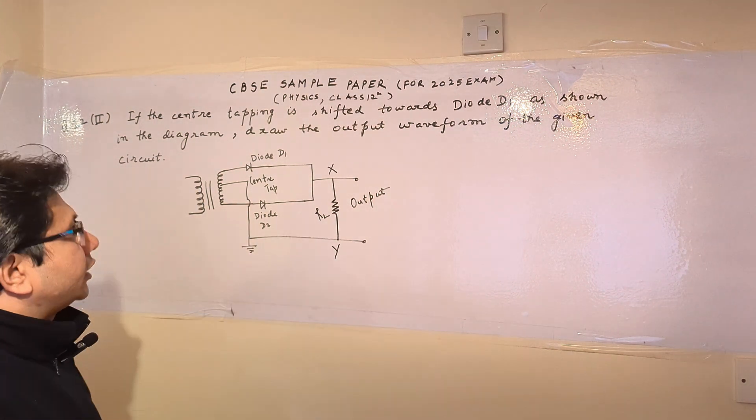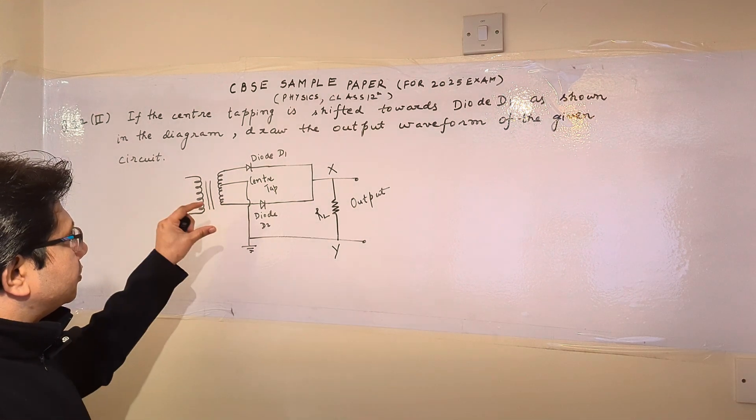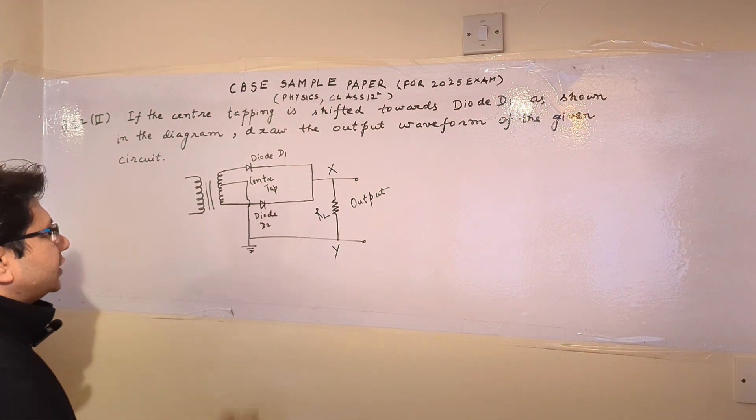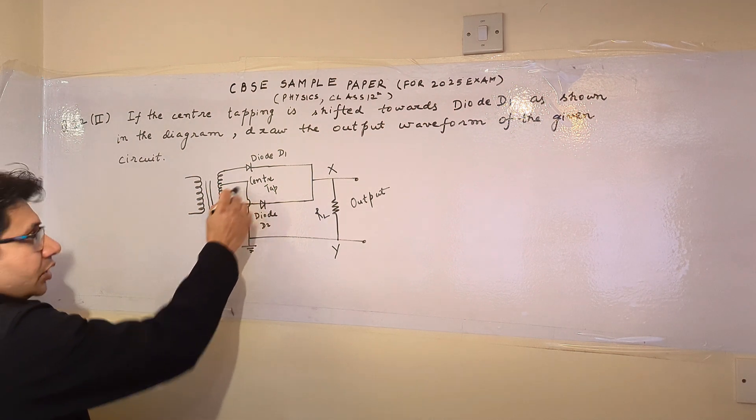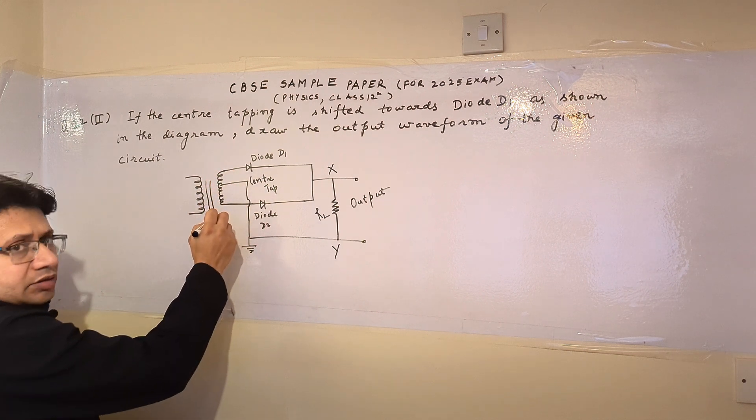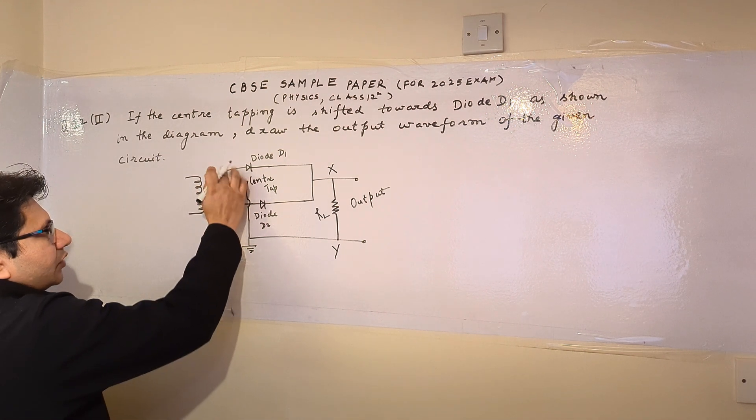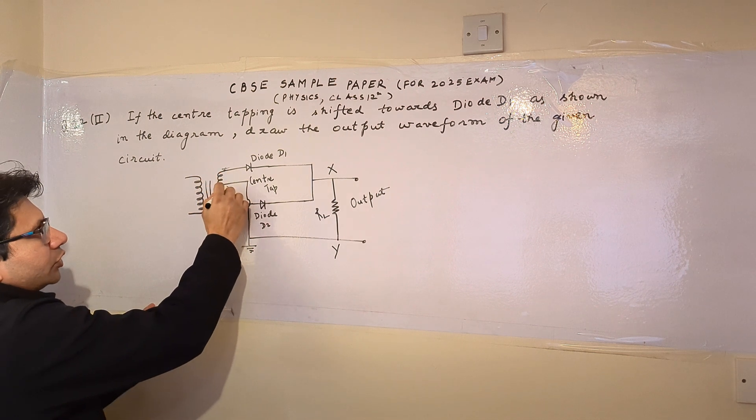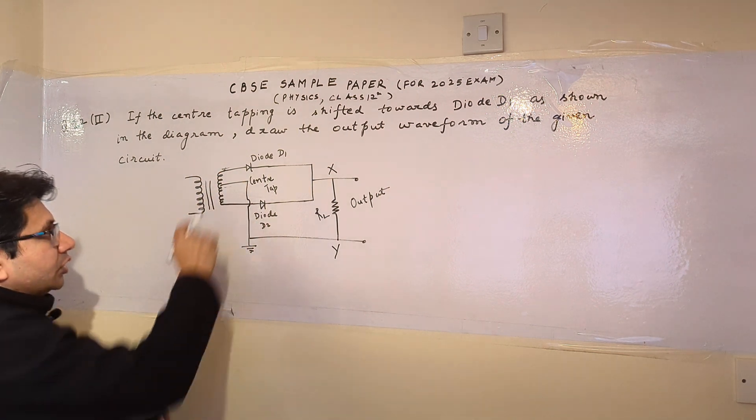So here is a given circuit of a full wave rectifier, and the main thing here is that the center tapping is not exactly at the center. It means that the secondary winding is divided into two sections in such a manner that the upper section has a lesser number of turns as compared to the lower section.